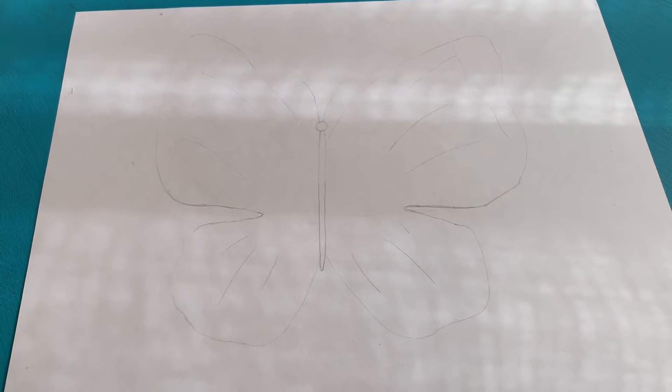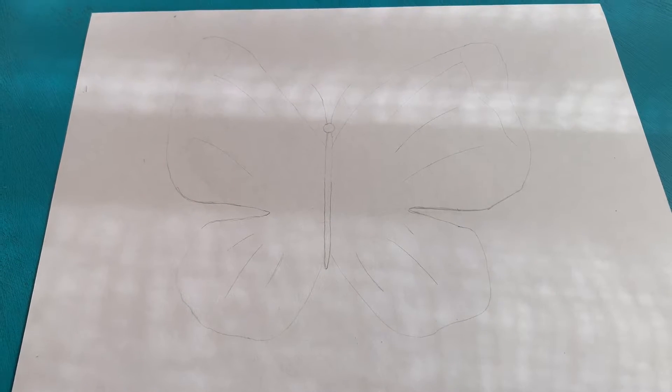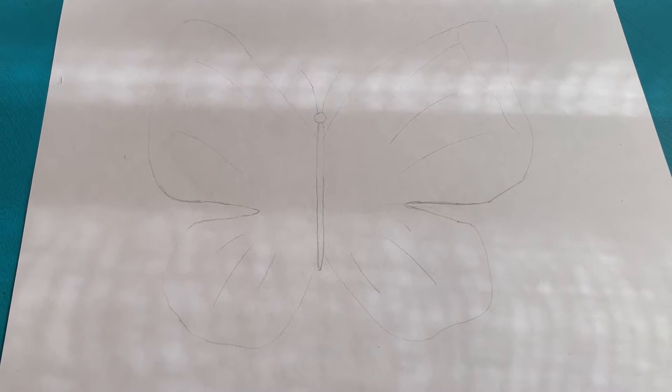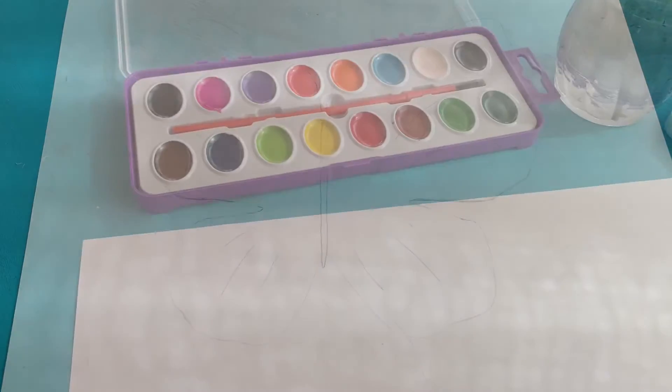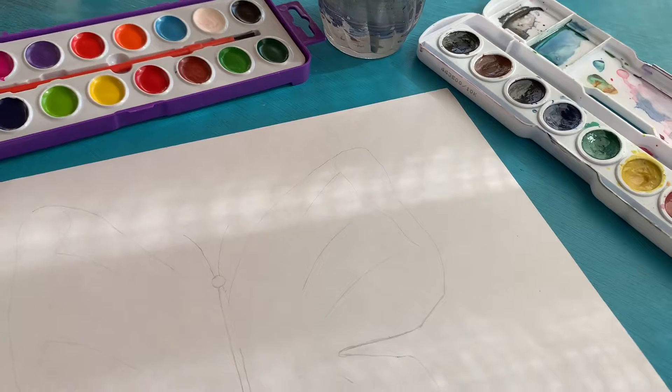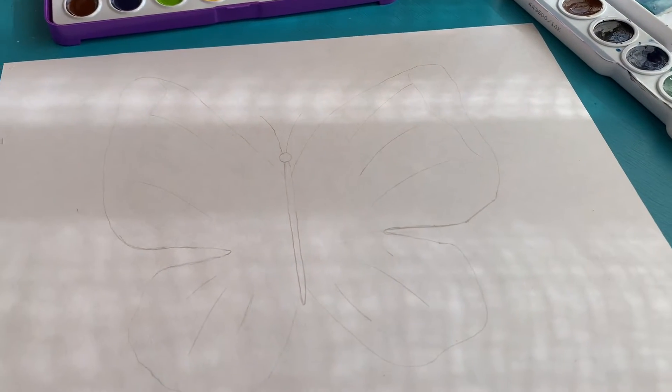So first, you're going to draw your butterfly on your paper. Make sure you draw it very lightly. I know with mine, you can barely see it, but this is how you want your butterfly to look. Next, it's time to set up your paint and get ready for some fun.